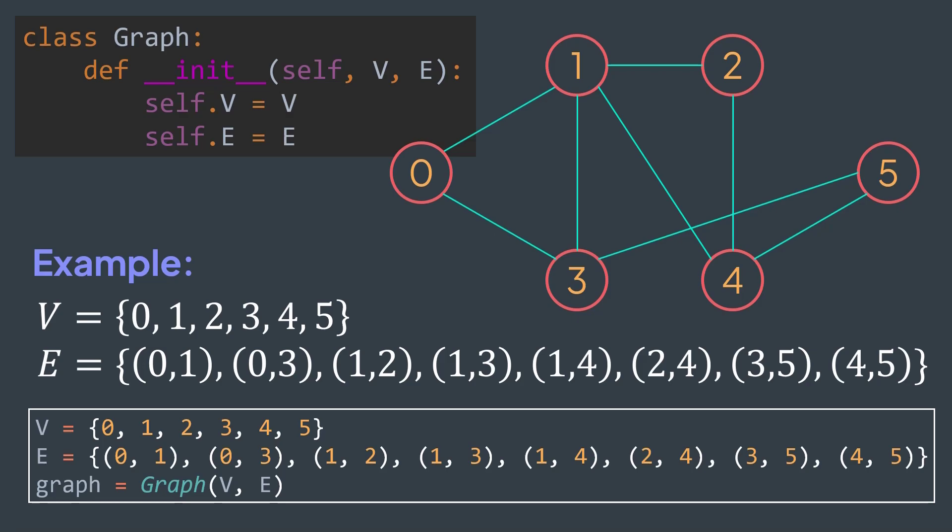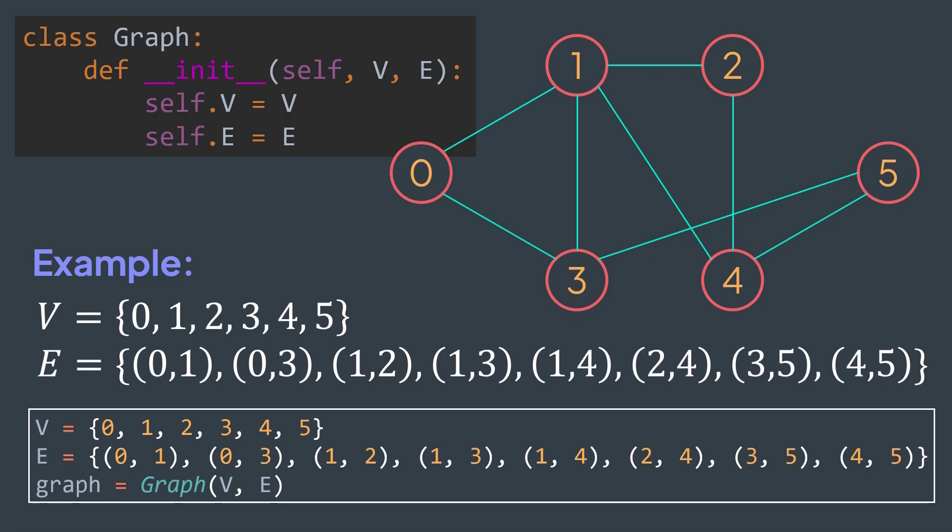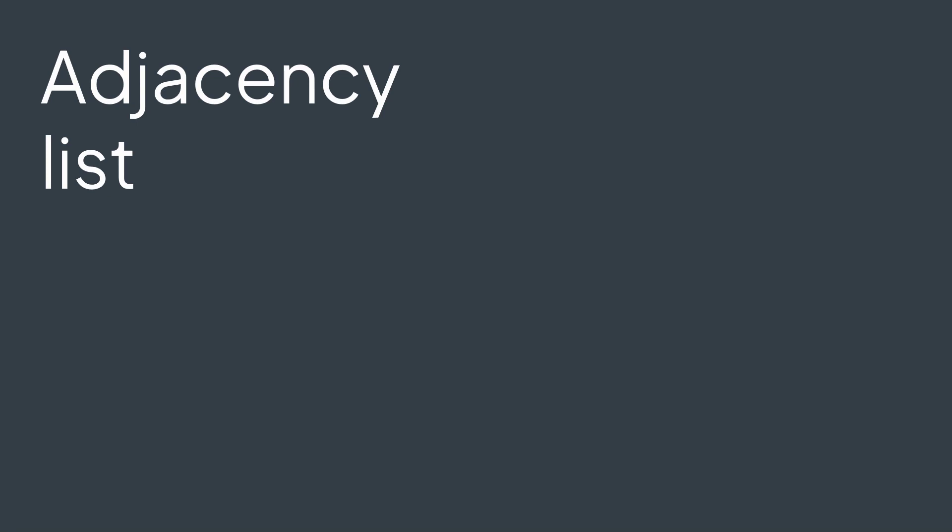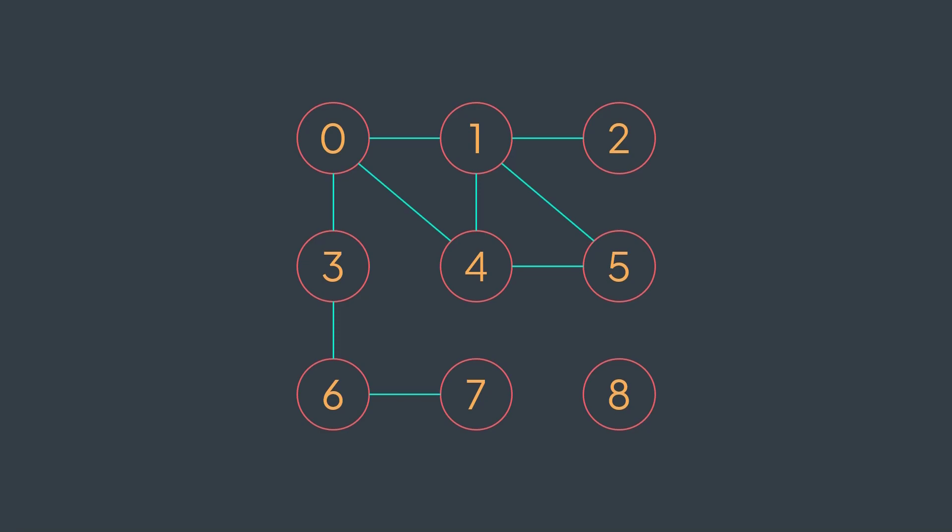For example, a main operation we will often use in graph algorithms is traversing the adjacent vertices of a vertex, also called neighbors. With this implementation, we need to traverse all the edges to find neighbors, which is not efficient. This is why we will now introduce a popular graph implementation that we will often use: the adjacency list. Let's suppose that we have this graph. Take a pen and paper or text editor and write each vertex followed by the list of its neighbors.